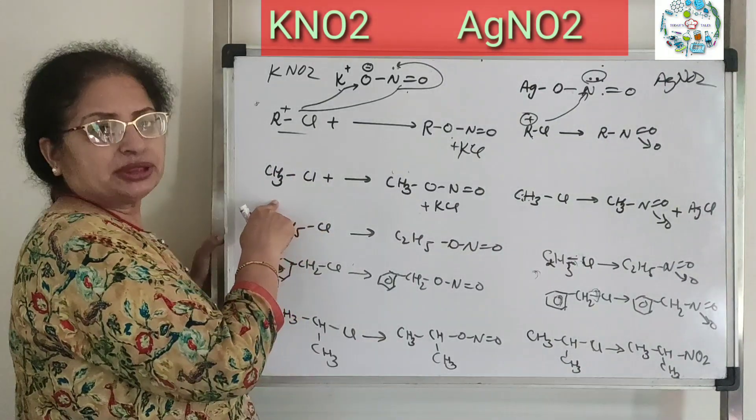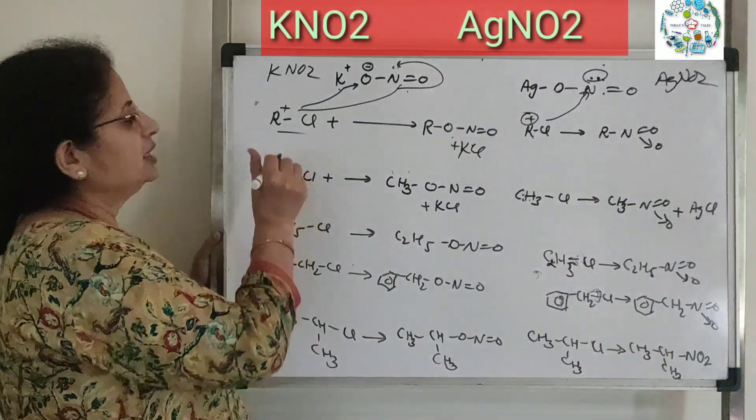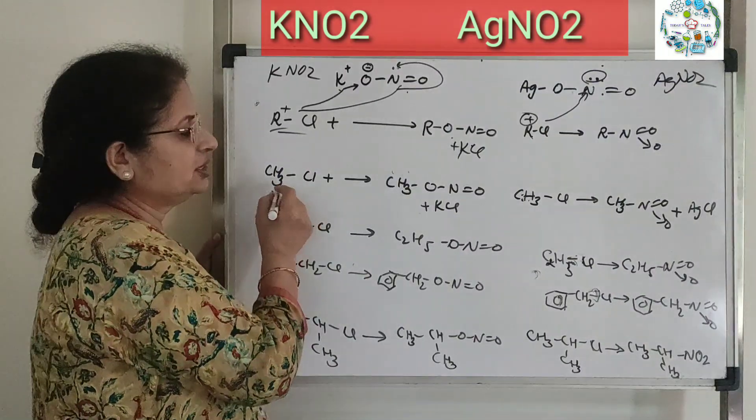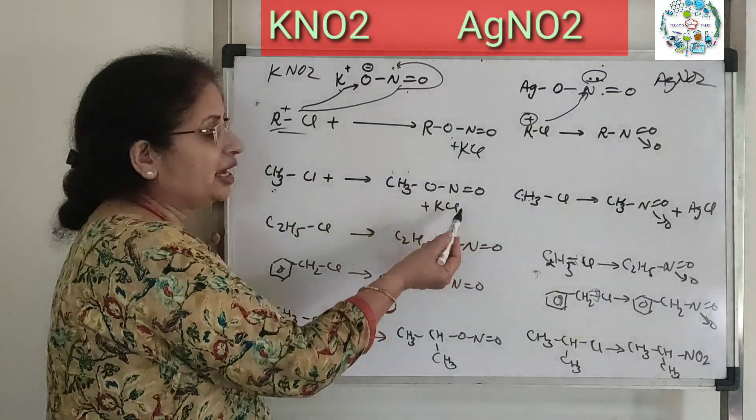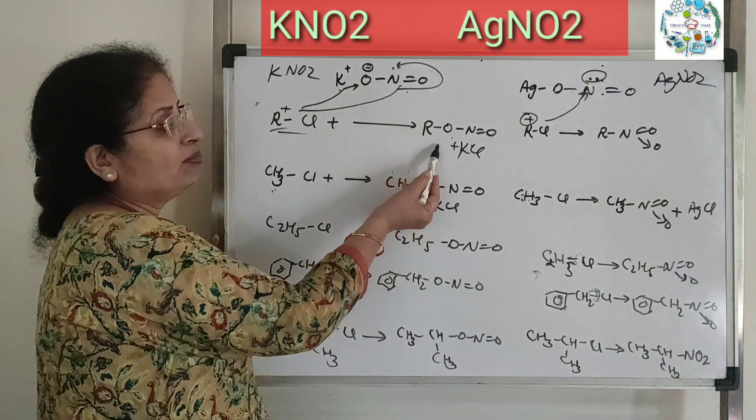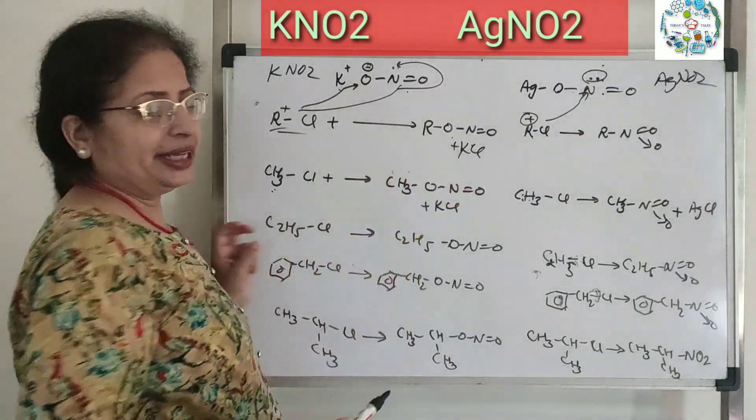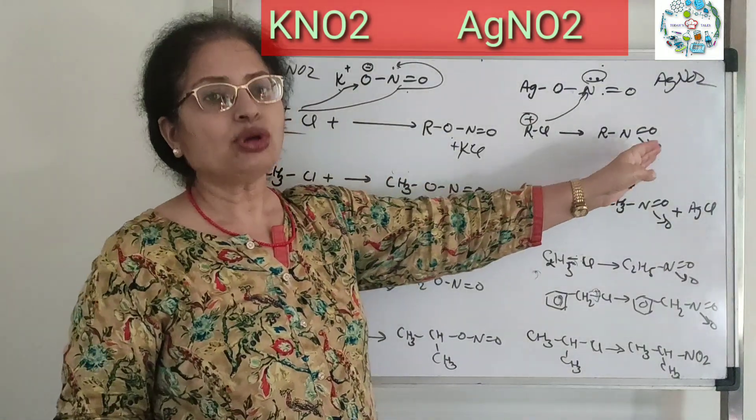Same way, if R is CH3-Cl, you get nitritomethane. We call these nitritoalkanes with KNO2, and these are nitroalkanes with AgNO2.